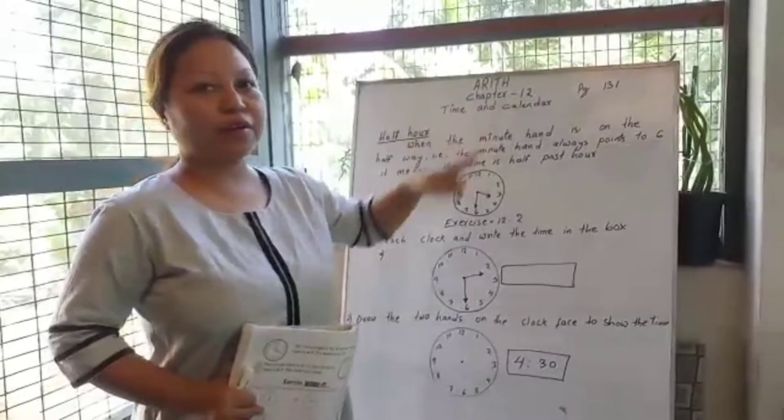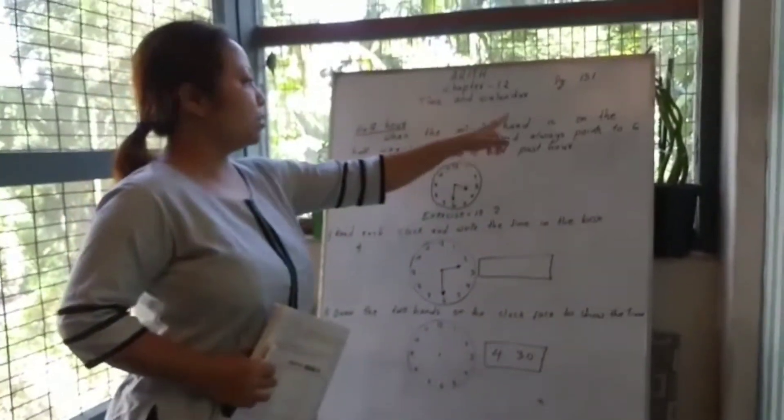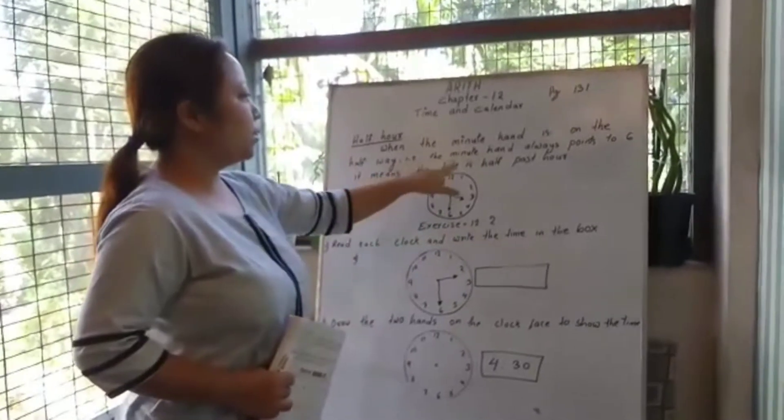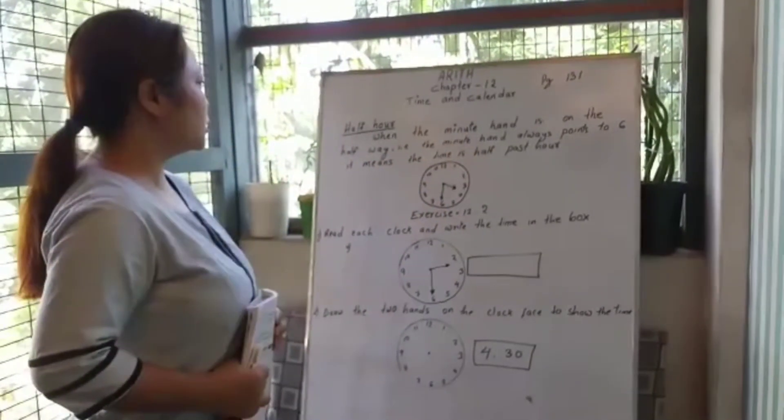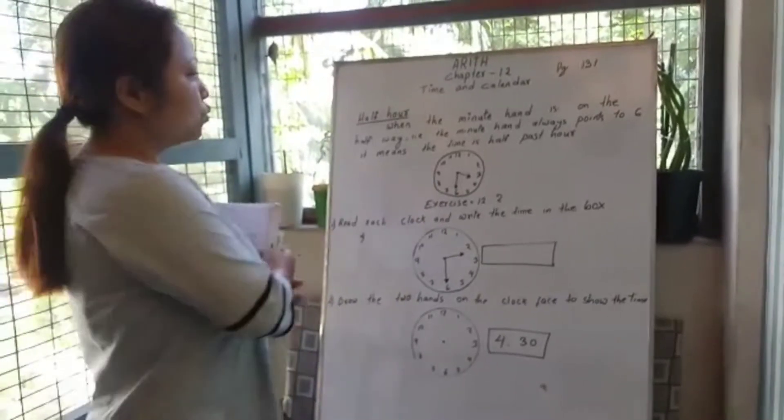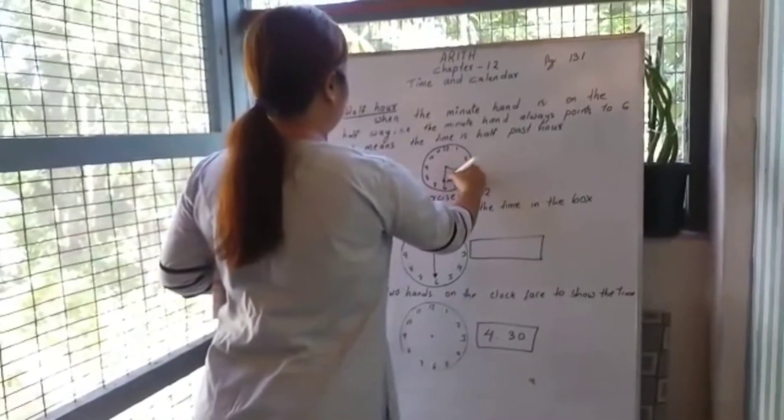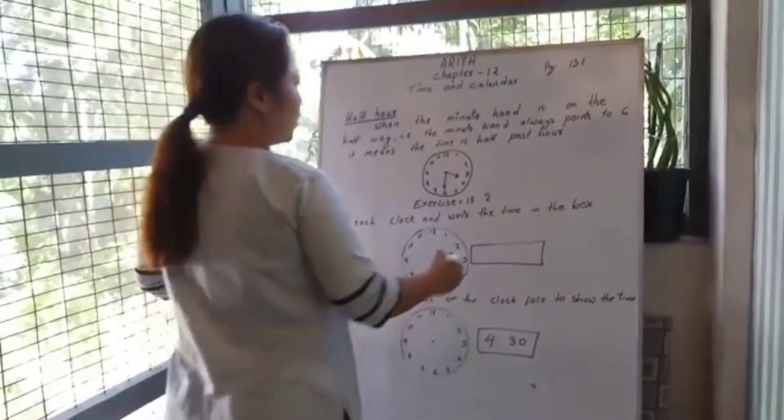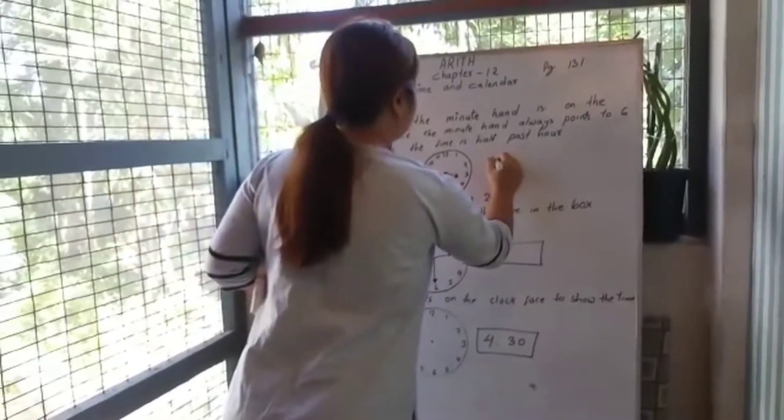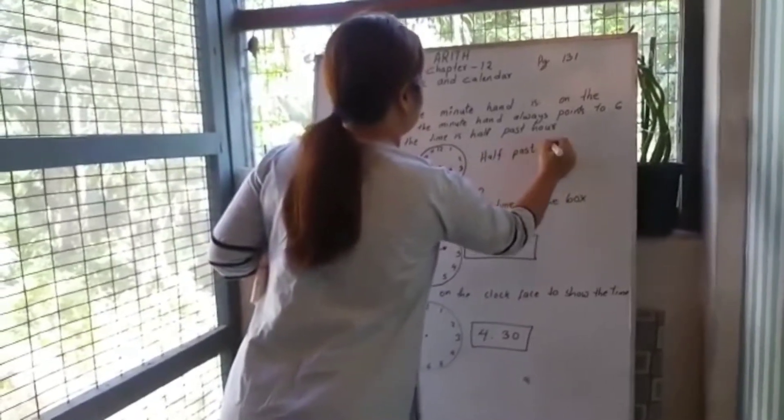Page number 131, half hour. When the minute hand is halfway, that is the minute hand always points to 6, it means the time is half past hour. Let us look at this clock: the short hand is at 3 and the long hand is at 6, so the time is half past 3.